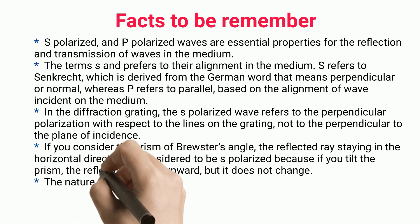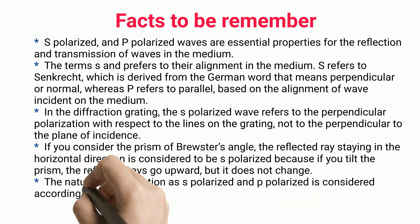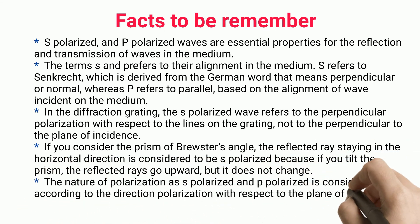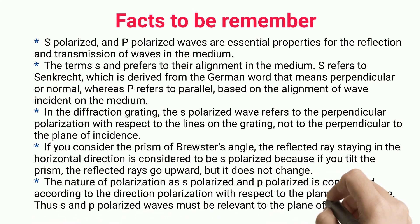If you consider the prism at Brewster's angle, the reflected ray staying in the horizontal direction is considered to be S-Polarized, because if you tilt the prism, the reflected rays go upward, but it does not change. The nature of polarization — S-Polarized and P-Polarized — is considered according to the direction of polarization with respect to the plane of incidence. Thus, S and P-Polarized waves must be relevant to the plane of incidence.